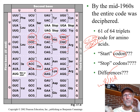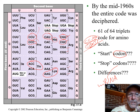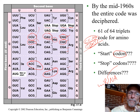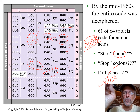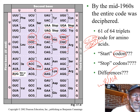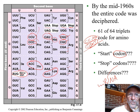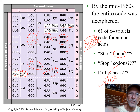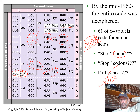Now notice there are three codons that say 'stop' — that's not an amino acid abbreviation, it means this is the end of the message, like a period or a punctuation mark. And then you have one that says not only 'start,' but also put methionine at the beginning. Notice the stop codons don't say put an amino acid here and then stop — they just say stop. There's only one start codon, AUG, and there are three stop codons.